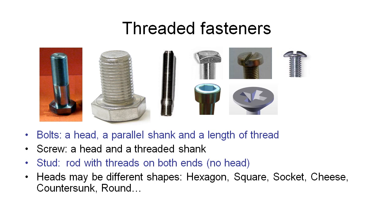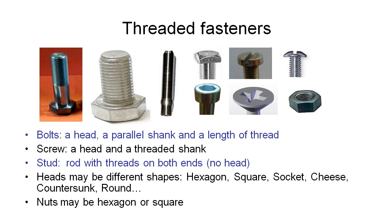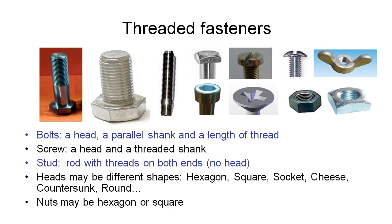This is an example of a round headed screw shown side on. The nuts we use with these bolts are typically hexagon or square. A wing nut has protruding tabs on the side so you can tighten or loosen it with your fingers.